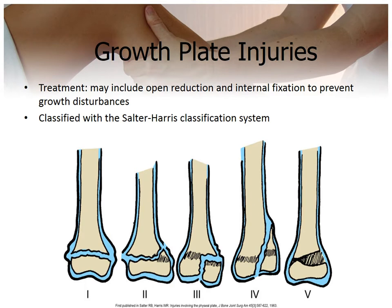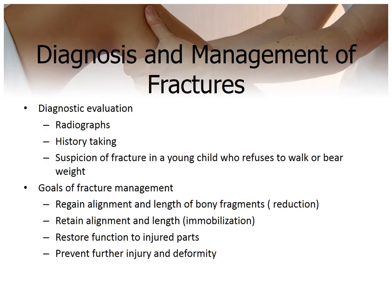Growth plate injuries are a big deal because damage to the growth plate can affect future bone growth. Unfortunately, it's a frequent site of damage during trauma. The weakest point of long bones is the cartilaginous growth plate, also known as the epiphyseal plate. Diagnosis and management includes taking x-rays and a history. You can be suspicious of fracture in young children who refuse to walk or bear weight on a leg, or refuse to use their arm. Other signs include generalized swelling, pain, tenderness, diminished functional use of the affected part, possible bruising, and severe muscle rigidity or crepitus.